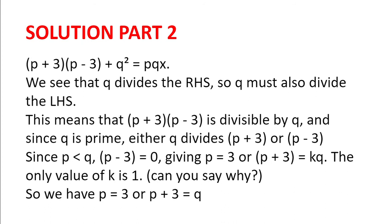Now, we see that q divides the right-hand side. So q must also divide the left-hand side. And since q divides q squared, p plus 3 multiplied by p minus 3 is also divisible by q. And since q is prime, either q divides p plus 3 or it divides p minus 3.